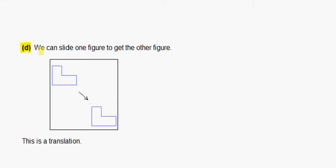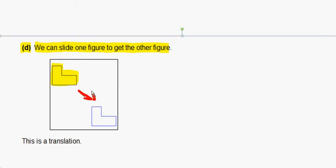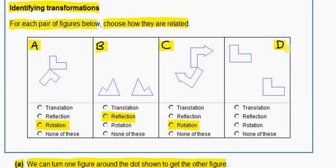Now let's look at figure D. We can slide one figure to get the other figure. We start with this figure here and slide it over to get this figure here. This is a translation. So in figure D, we have a translation.